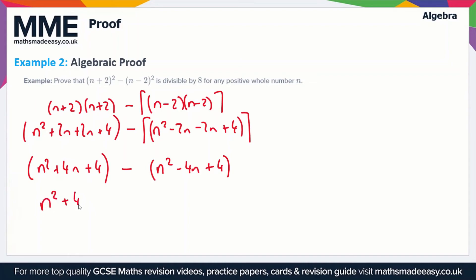Then minus -4n gives us +4n, and -4 gives us -4.